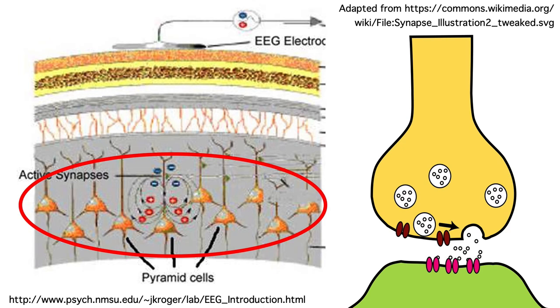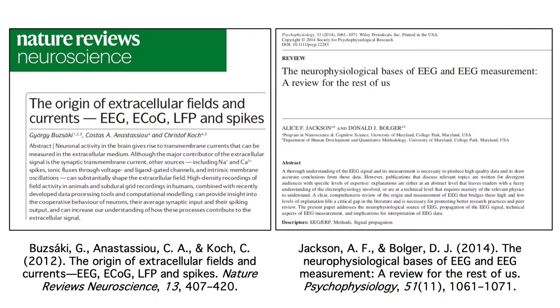Okay, now let's talk about how postsynaptic potentials in these pyramidal cells lead to voltages that we can record on the scalp. This will be a highly simplified version of a complex sequence of events. You can read the details in these review papers.